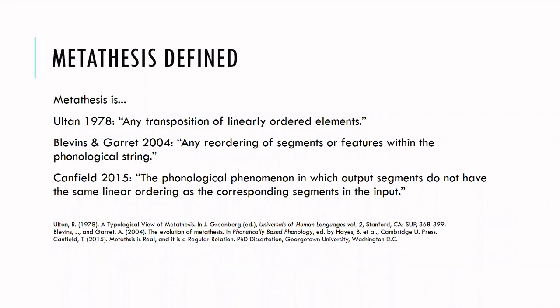Metathesis defined. There are many ways to word a definition of metathesis, but here are just three. Ultan 1978 says that metathesis is any transposition of linearly ordered elements. Blevins and Garrett 2004 said metathesis is any reordering of segments or features within the phonological string. Canfield 2015: metathesis is the phonological phenomenon in which output segments do not have the same linear ordering as the corresponding segments in the input — a more theoretically oriented definition.